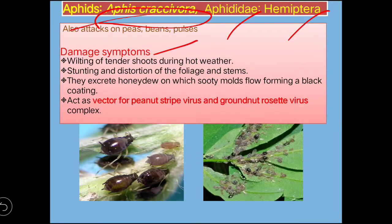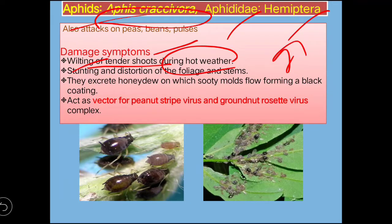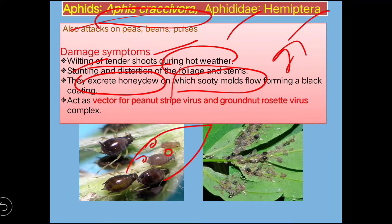The damage symptom of aphid is wilting of the tender shoot, which occurs during hot weather. Since aphids suck the sap from the plant, stunting will occur and the plant will not grow. They also excrete honeydew, on which sooty mold — a fungus — will grow, turning the surface black in color.